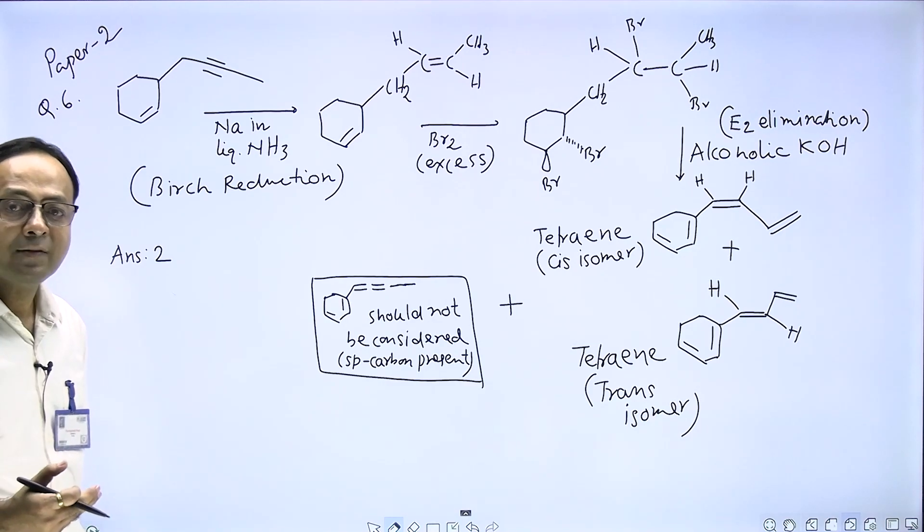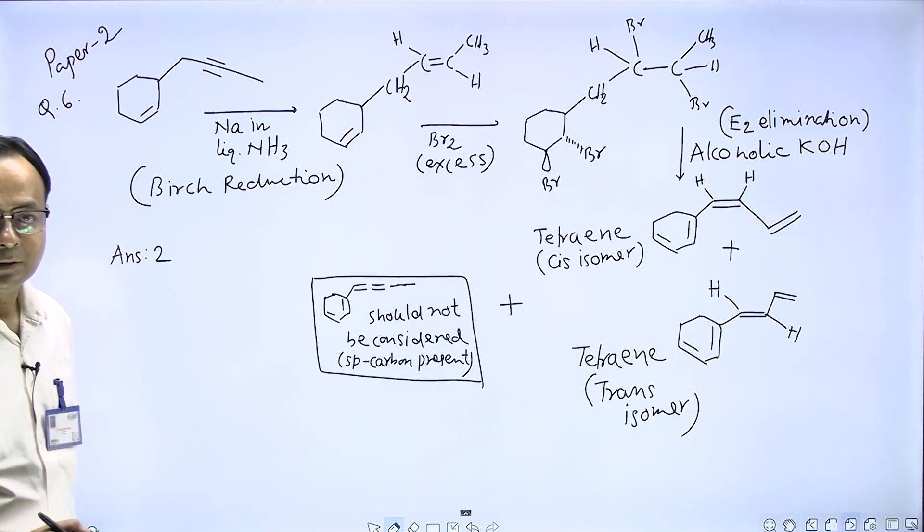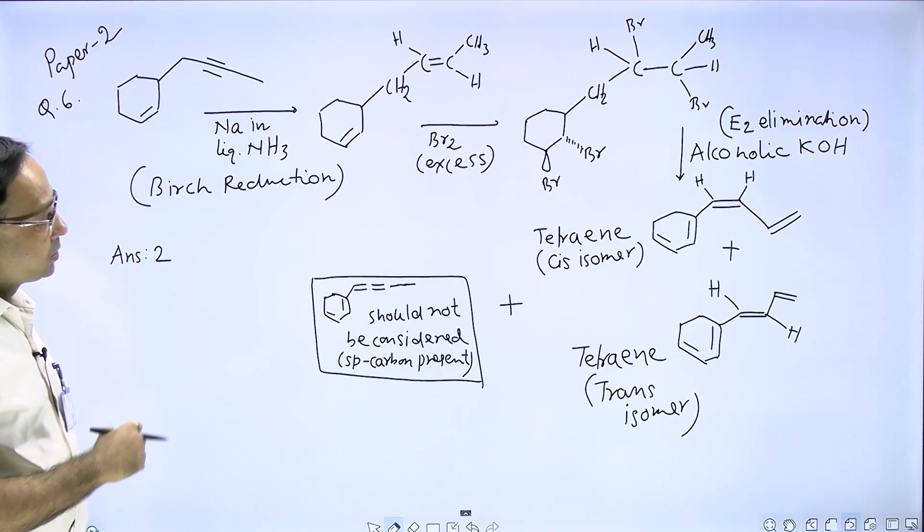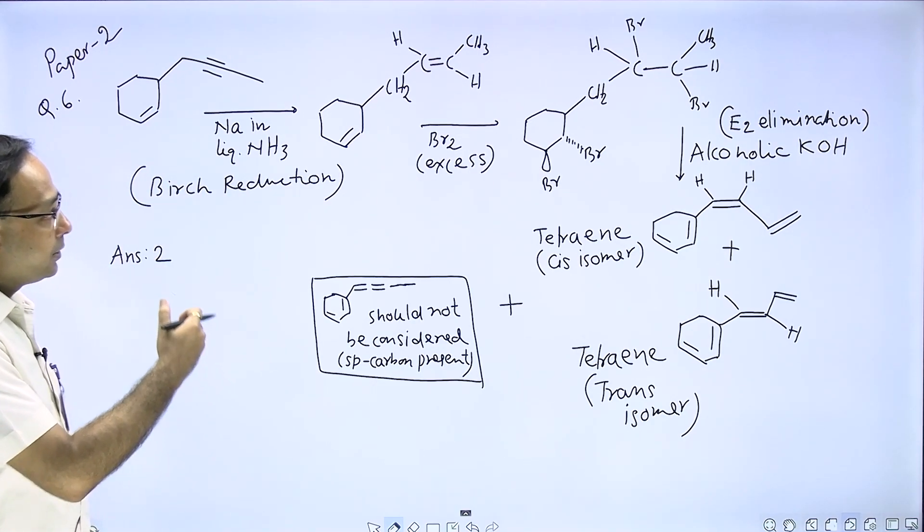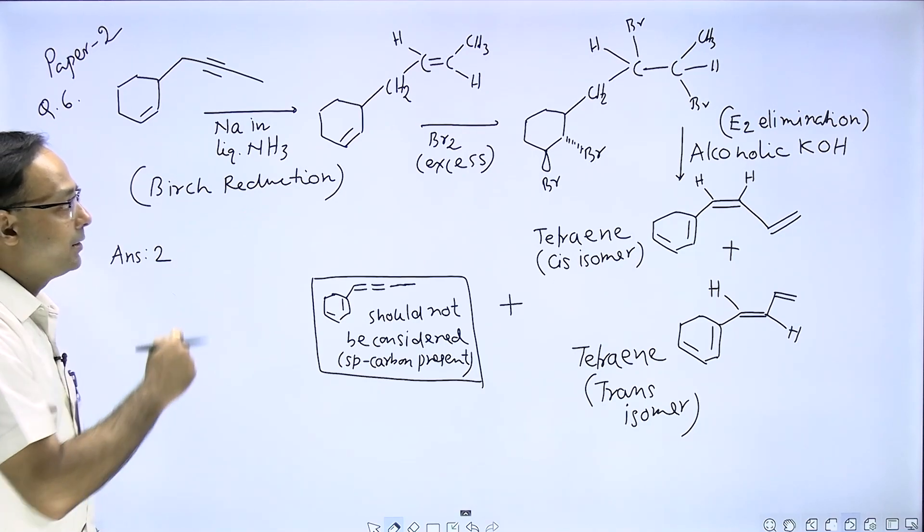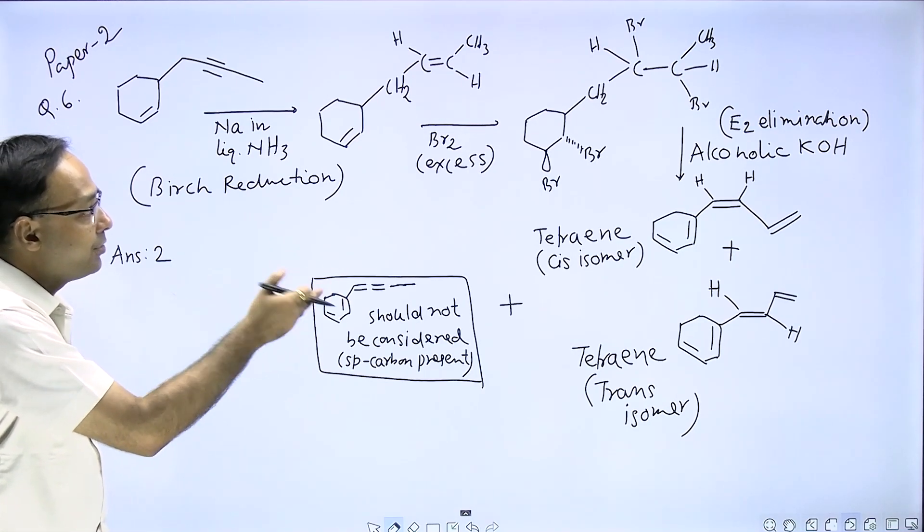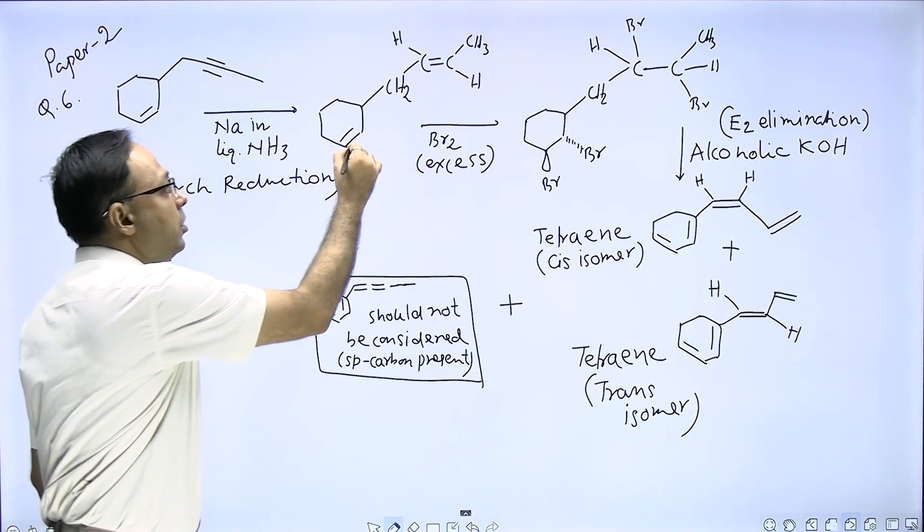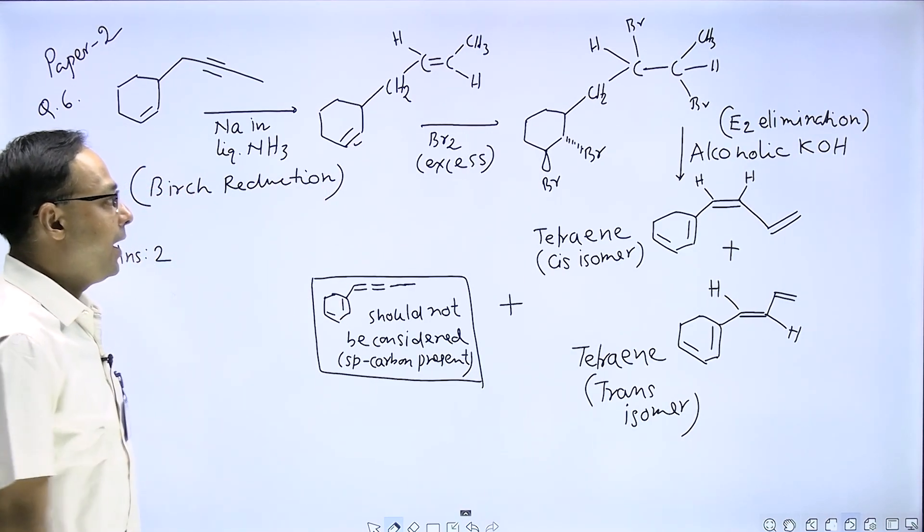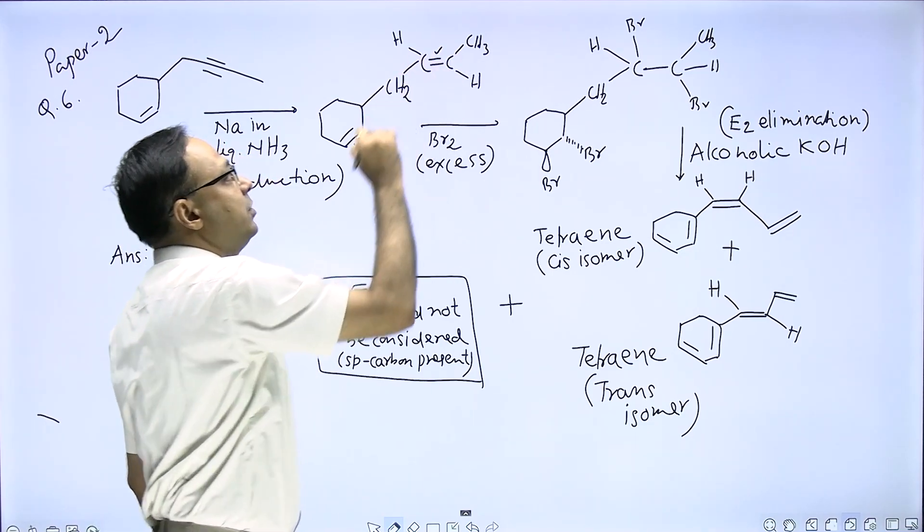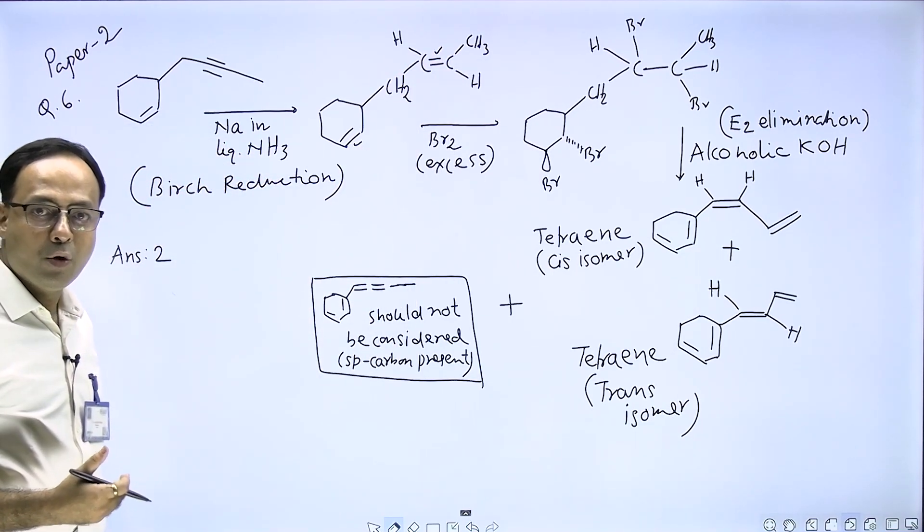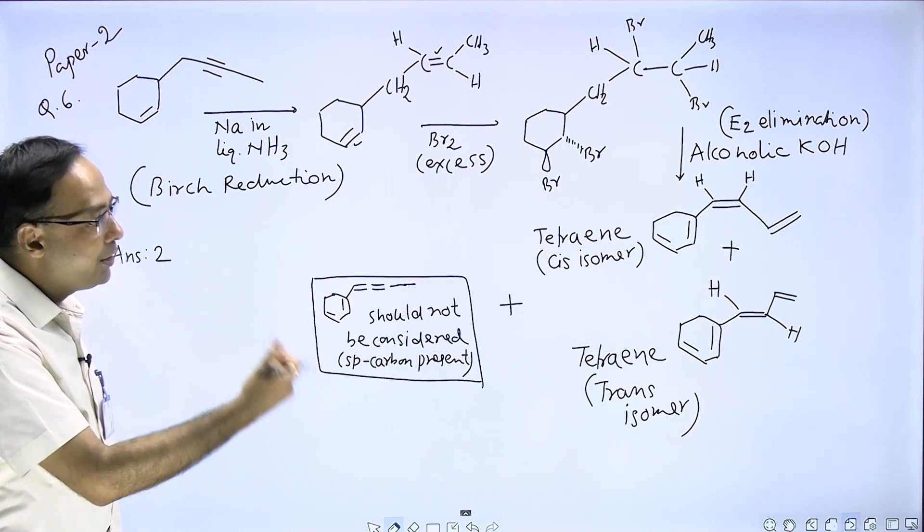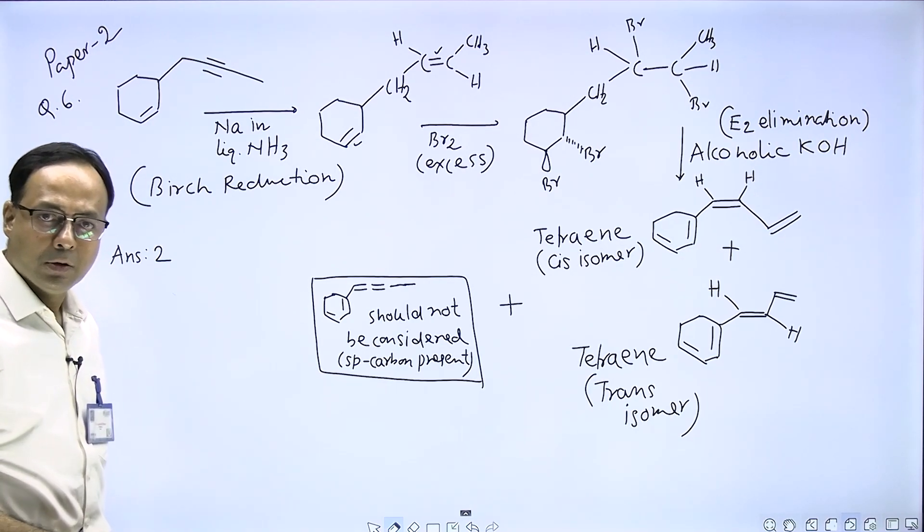Now the alkadiene reacts with excess bromine. Both double bonds react with bromine forming a tetrabromide. That tetrabromide is treated with alcoholic KOH, which is an example of elimination reaction by E2 mechanism, and some tetrain is formed.